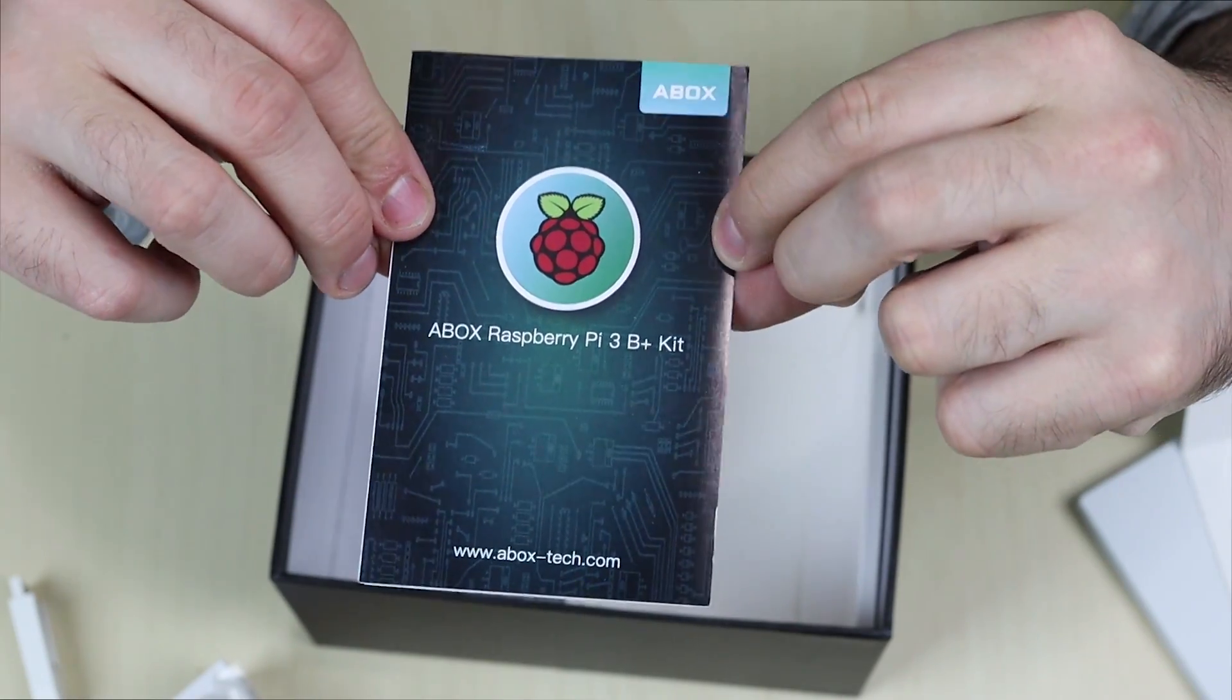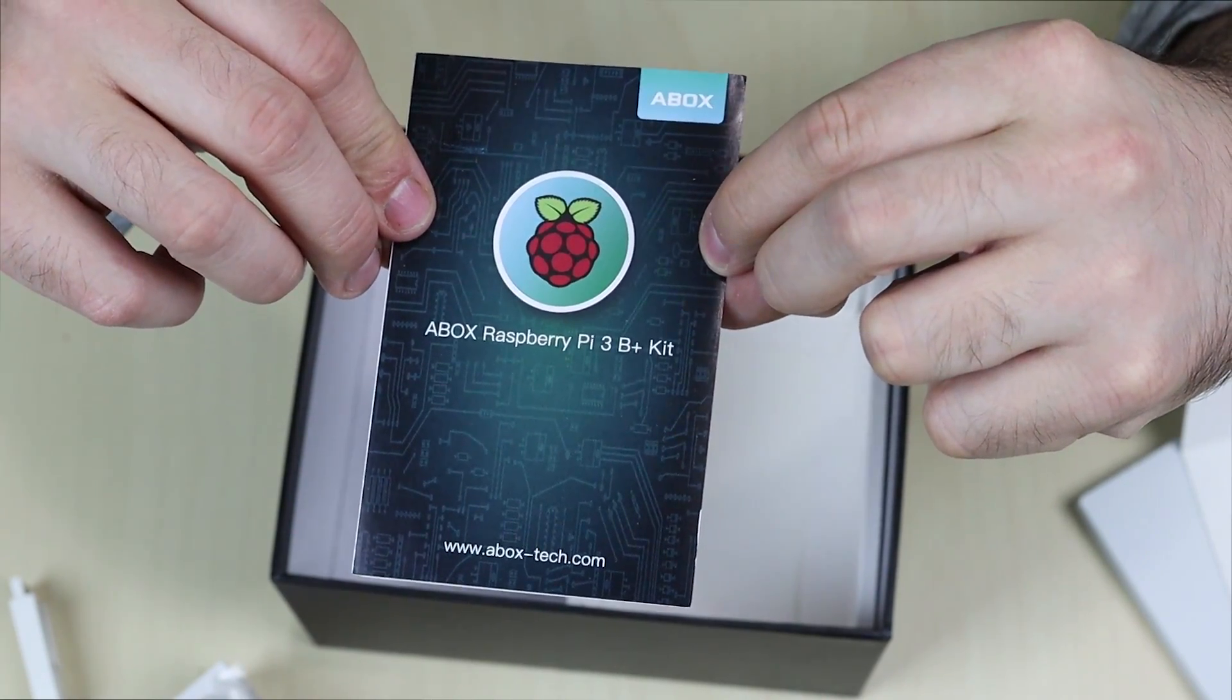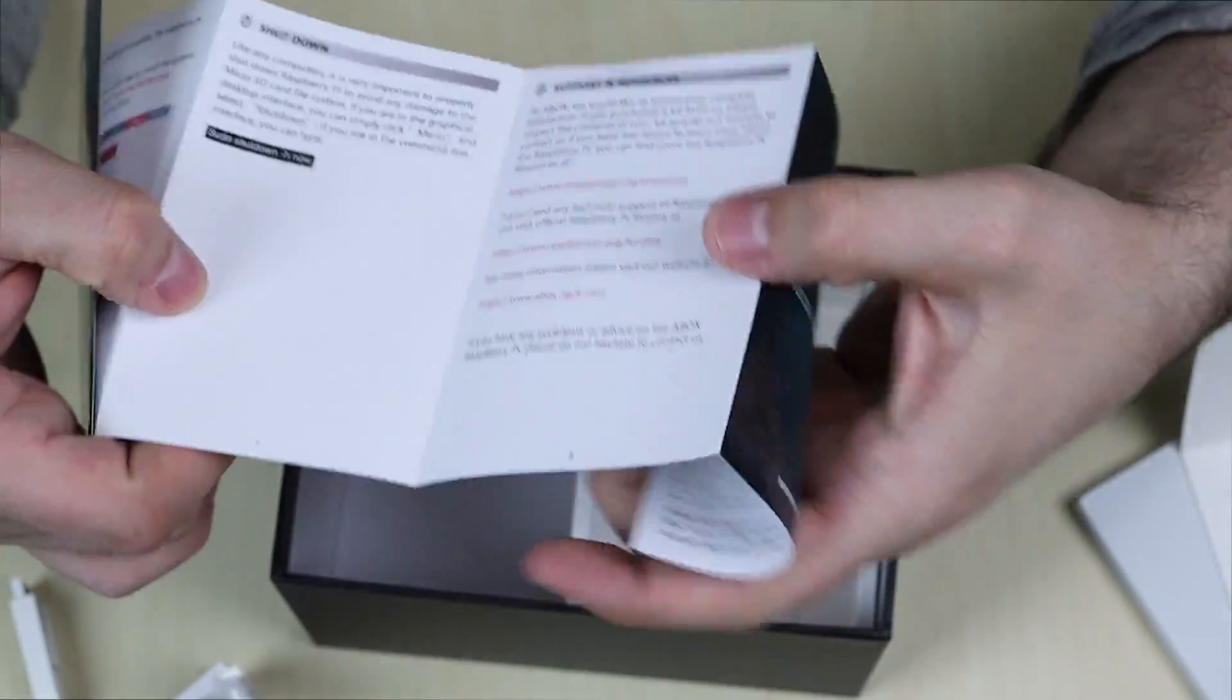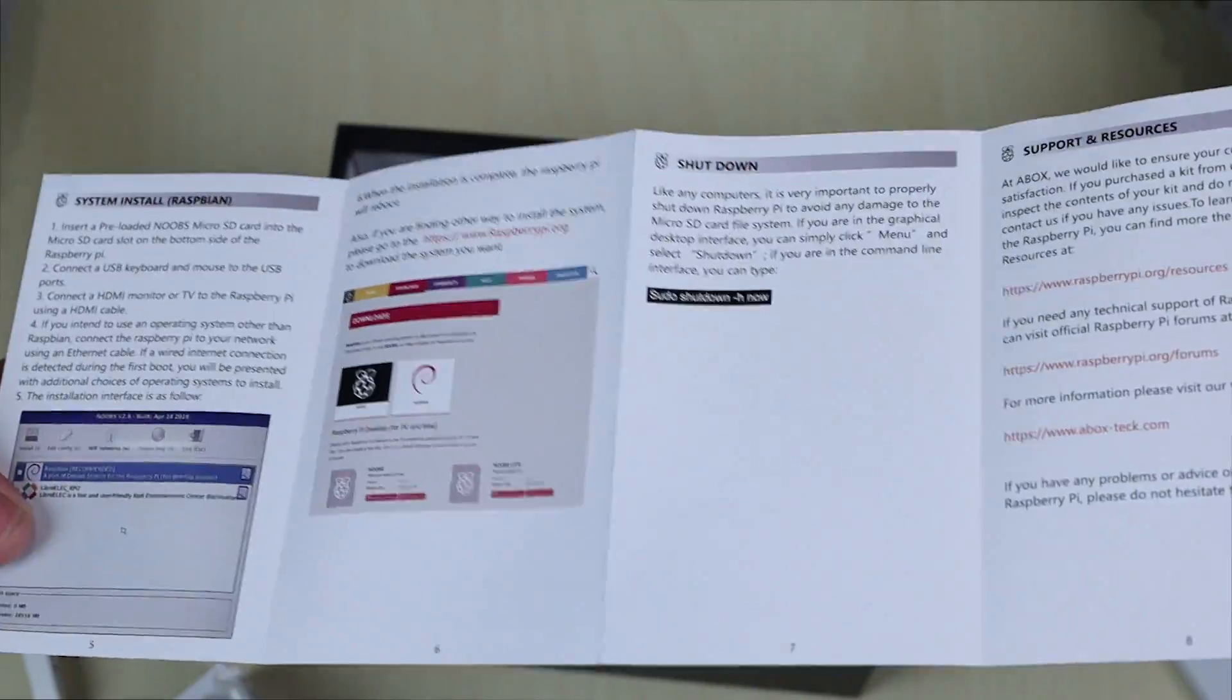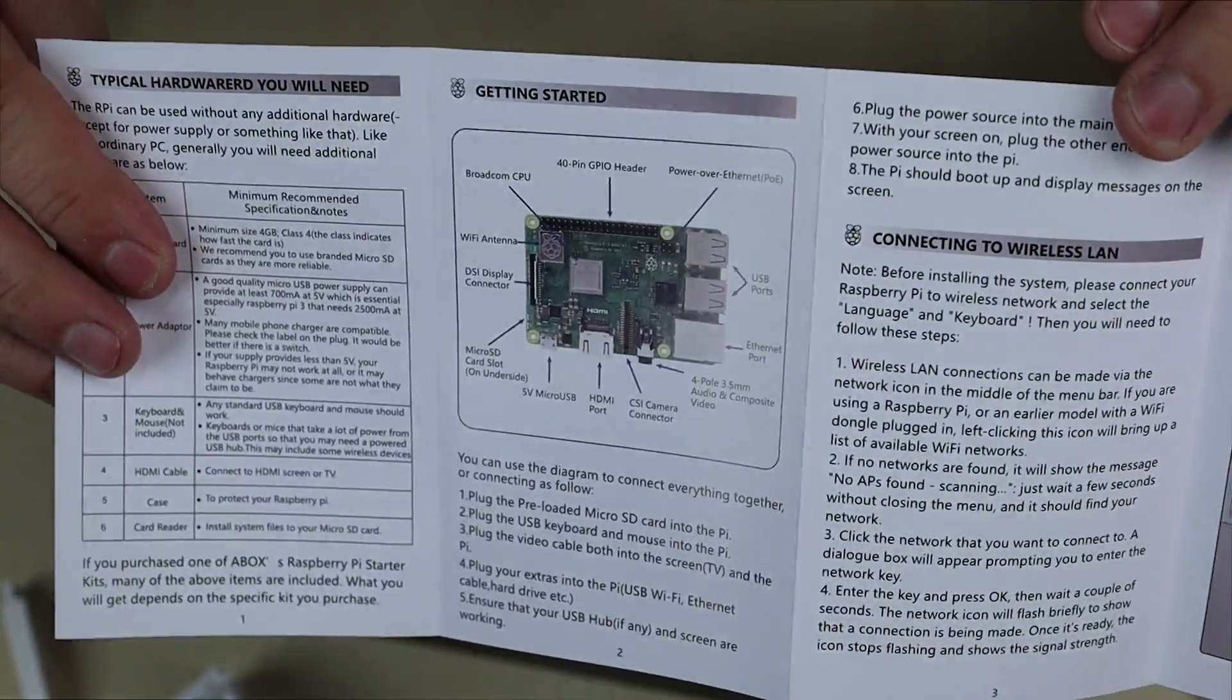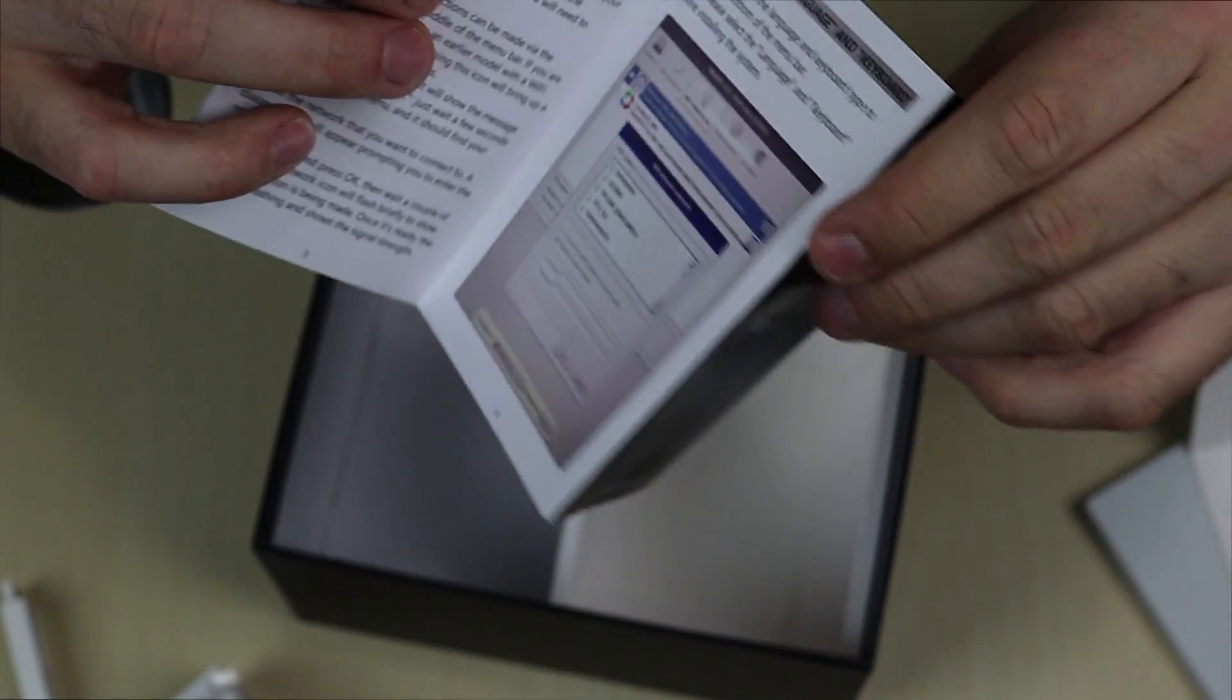And finally, it comes with this A-Box Raspberry Pi 3 Model B Plus kit booklet. It just shows you, like, it's got instructions on everything, basically. If you want to set this up, connect everything. And it's got a diagram of the Raspberry Pi 3 Model B Plus and everything. Cool little helpful guide.